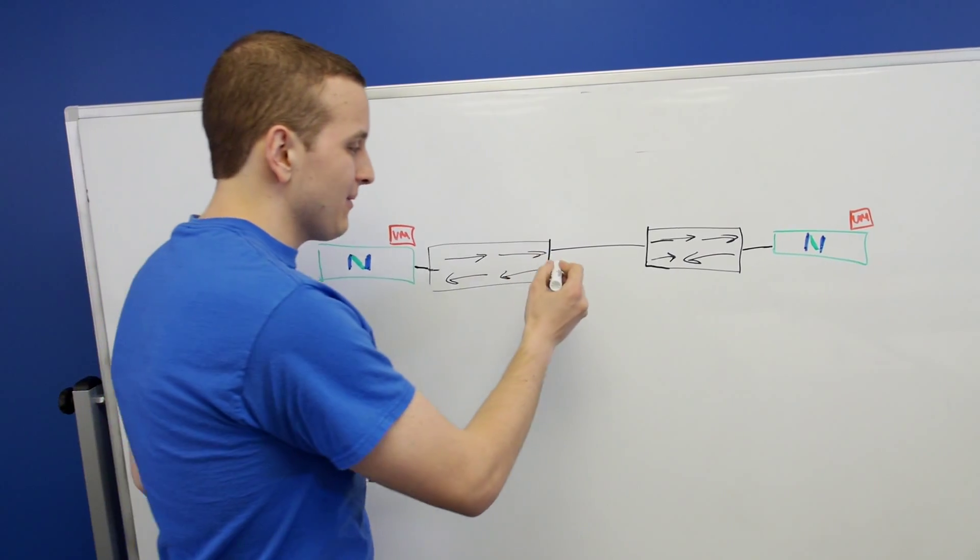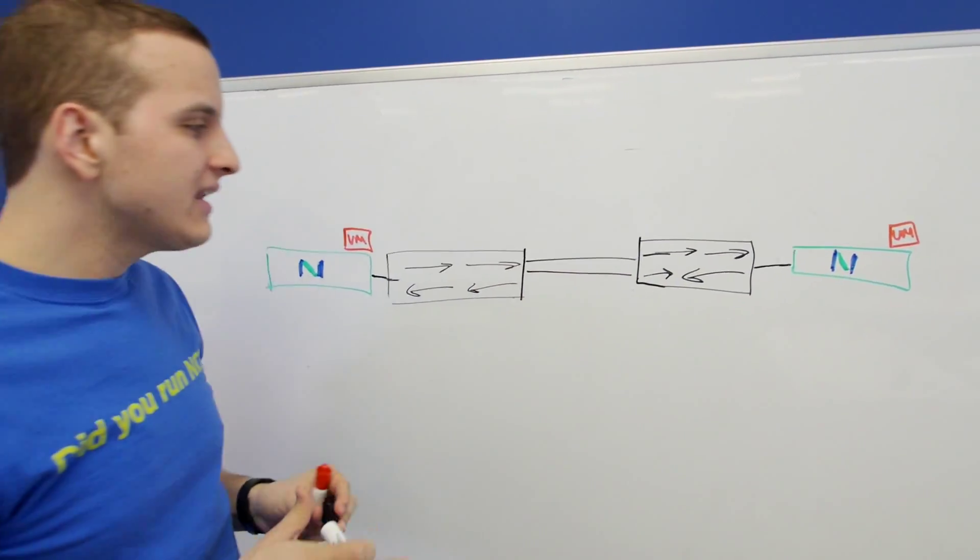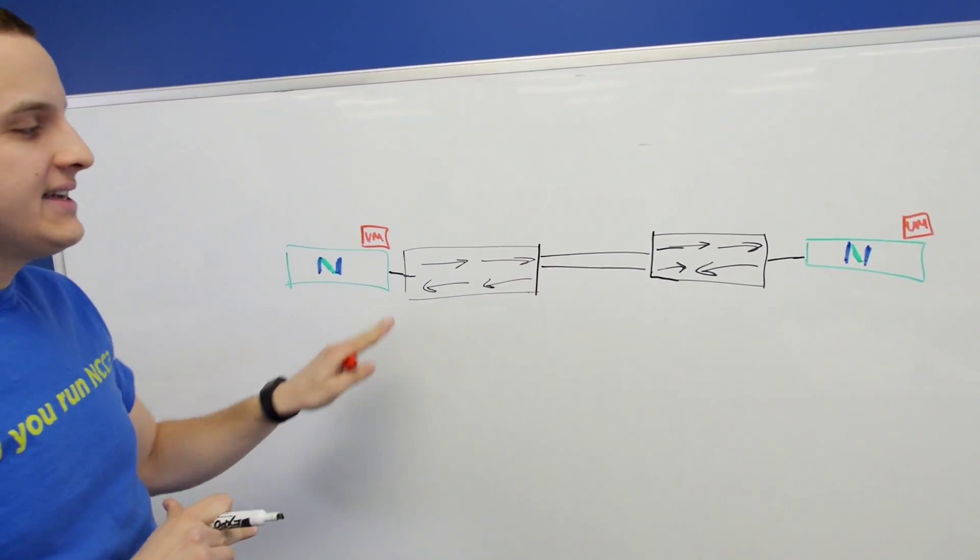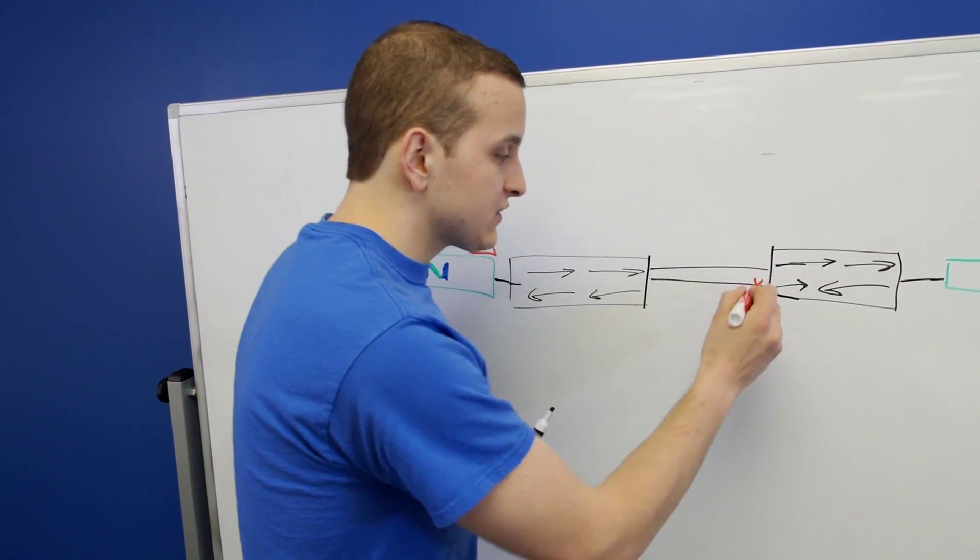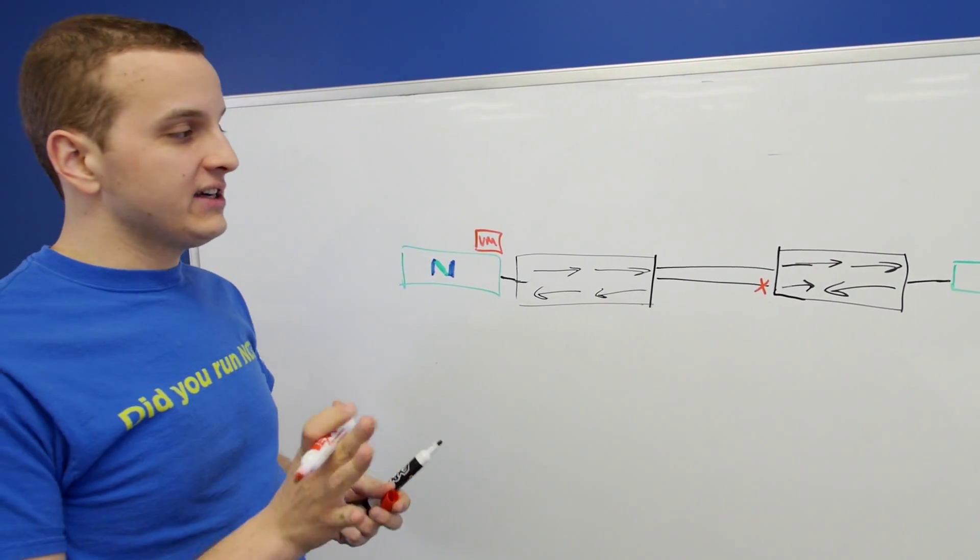So instead, we want to add a second link. Now the problem with just adding a second link is that Spanning Tree will then block one of these links to prevent a loop. So now you've got a link sitting there completely unused.